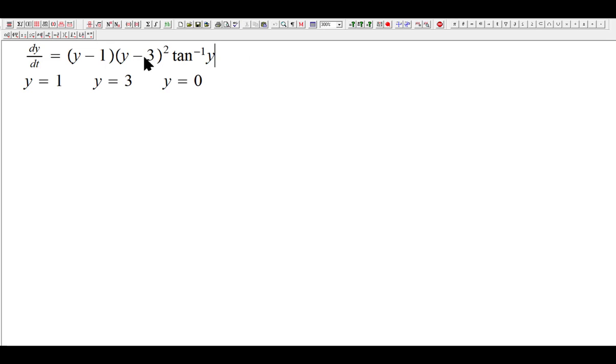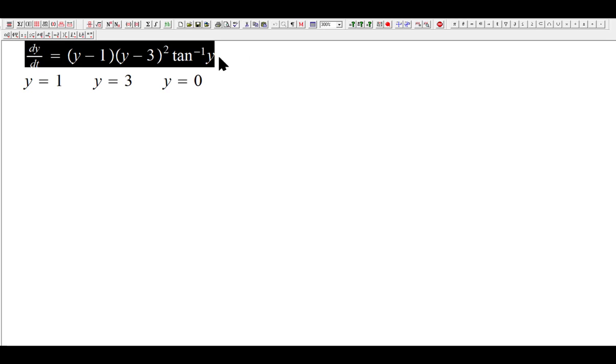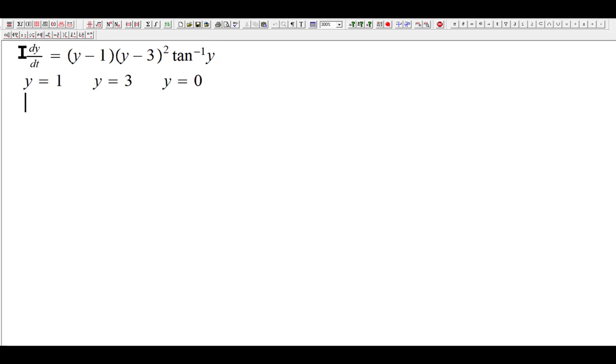Now we are looking at this autonomous differential equation, and in this differential equation you can notice that dy/dt becomes zero when y is 1, or y is 3, or y is 0. So what do we call these for these autonomous equations? We call these critical points.